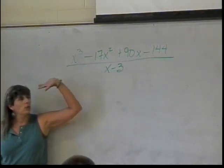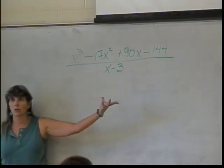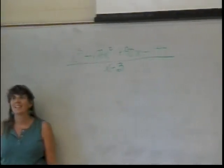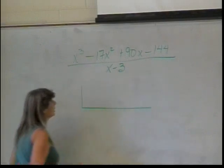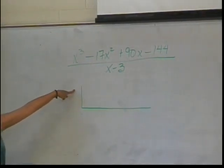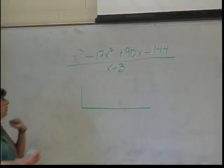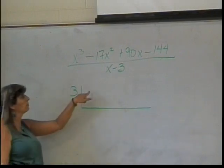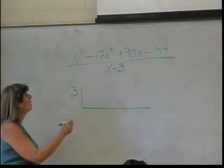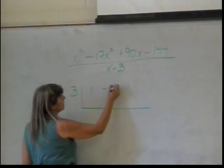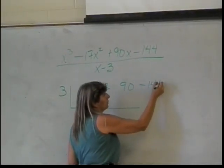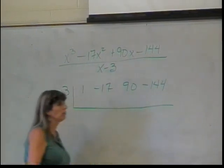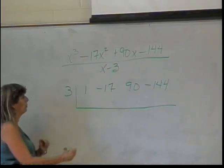So, how do I want to do this division to prove that that's going to be true? Synthetic. Synthetic, yes. Synthetic will make life much nicer. What number is going to go outside my synthetic division? 3. The 3. What numbers are going to go inside my synthetic division? 1, negative 17. 1, negative 17. 90. 90. And 144. And negative 144. So, now, remember when I do my synthetic division, I start out by bringing down the 1.